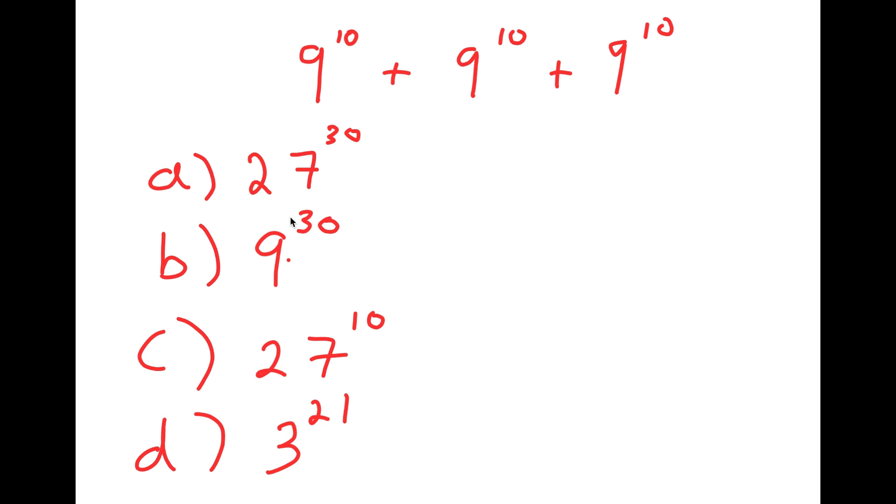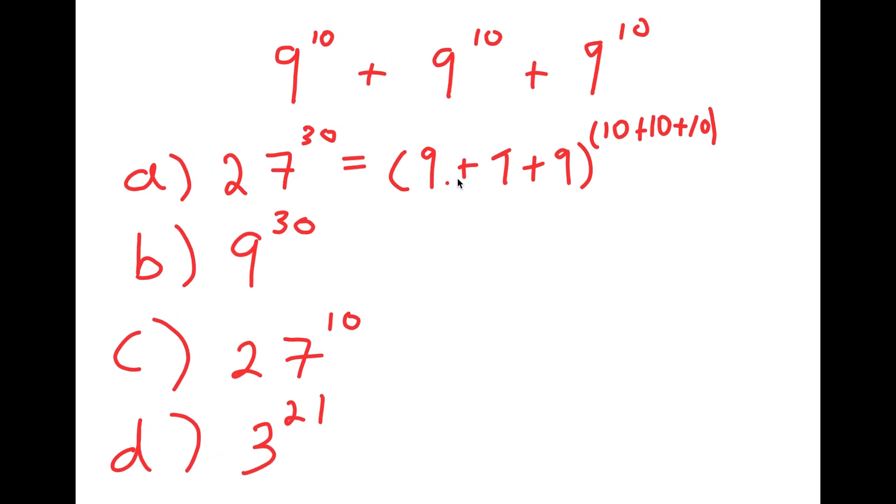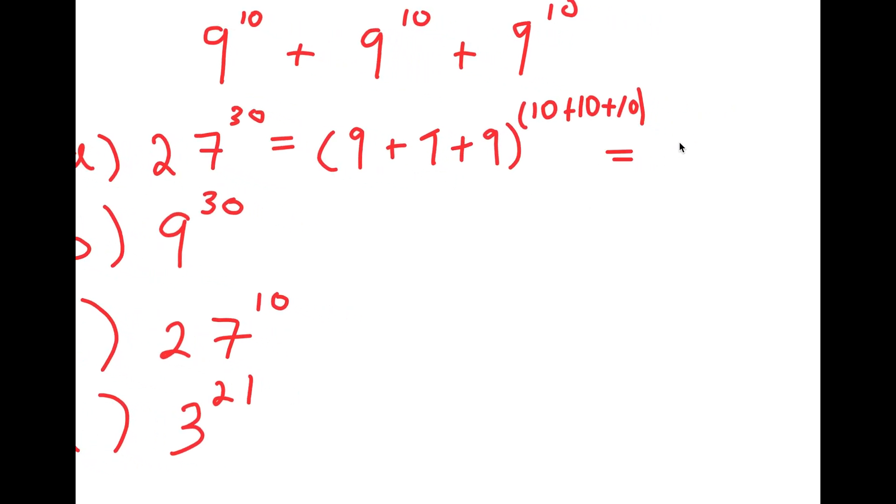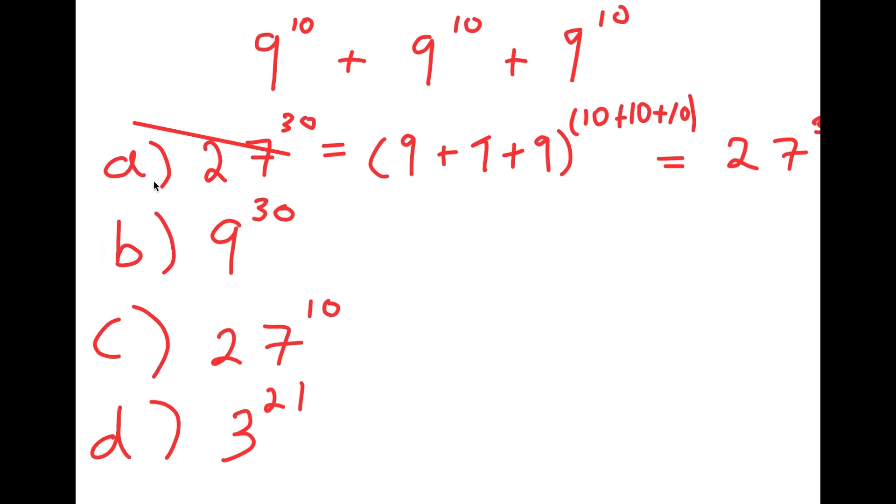So to first start out, let's go through all these option choices and see if they're right or not. So we first have A, 27 to the power of 30. And how this likely was resulted in was from adding all the bases and adding all the exponents. So we have 9 plus 9 plus 9 to the power of 10 plus 10 plus 10, which is equal to 27 to the power of 30. And this is actually wrong because this is not the proper way to add exponents.